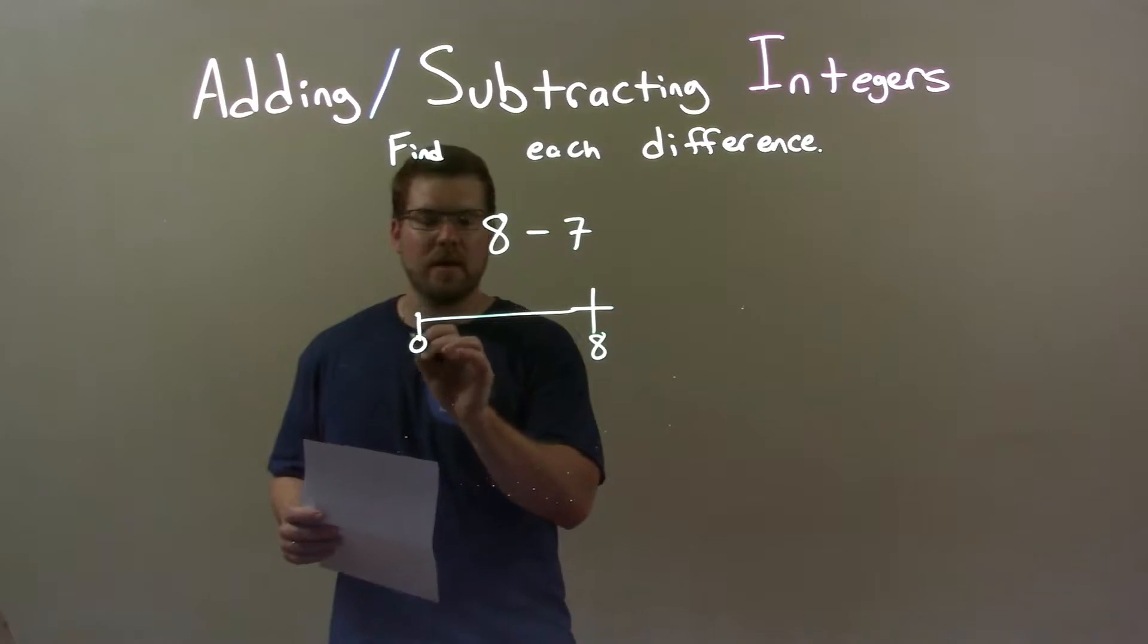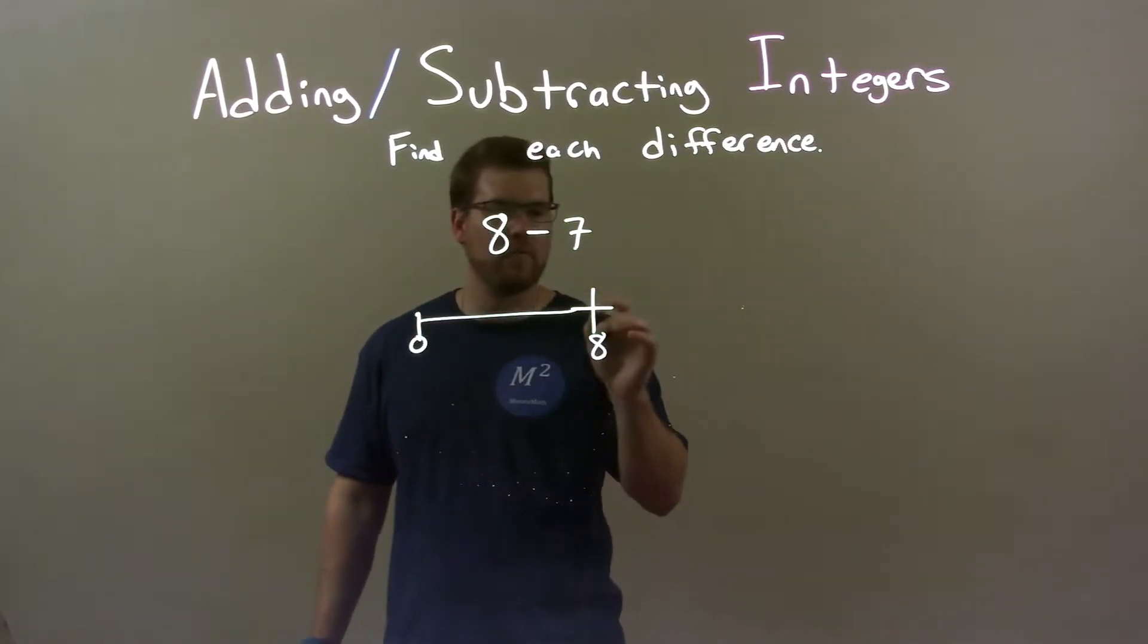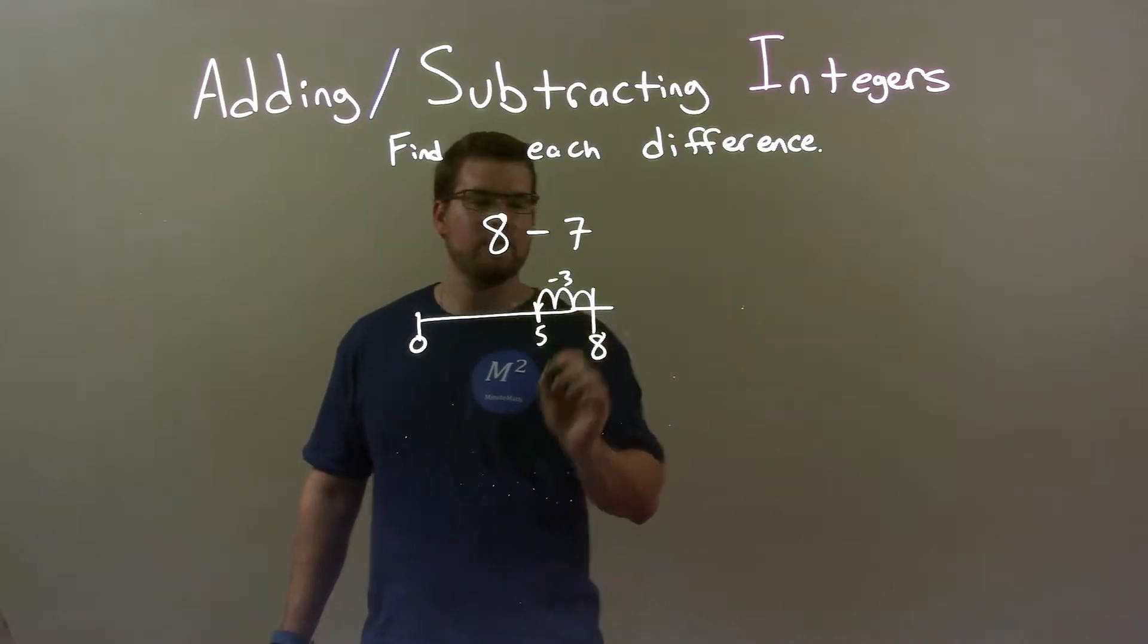And 0 is right here. So we're going to go 7 units to the left, we're subtracting 7 from 8. So if I go 3 units down, 8 gets me down to 1 to 7, 2 to 6, 3 to 5. So we have minus 3, got me to positive 5, okay?